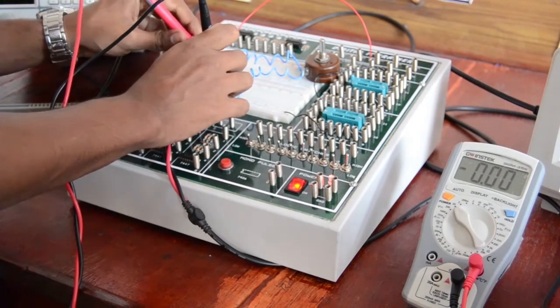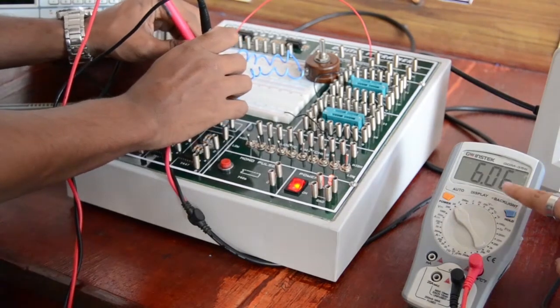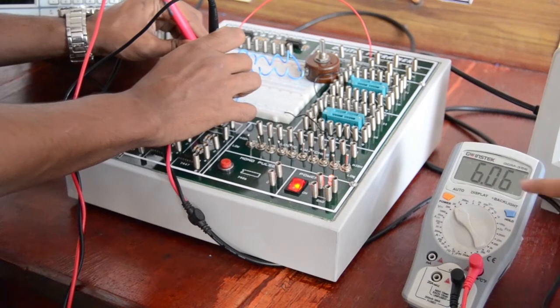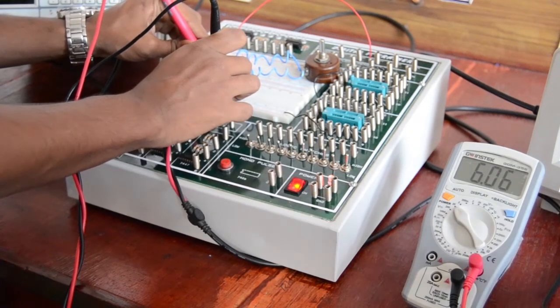Now, VCE, collector to emitter voltage. We get a collector to emitter voltage of approximately 6V, which is equal to half of VCC.